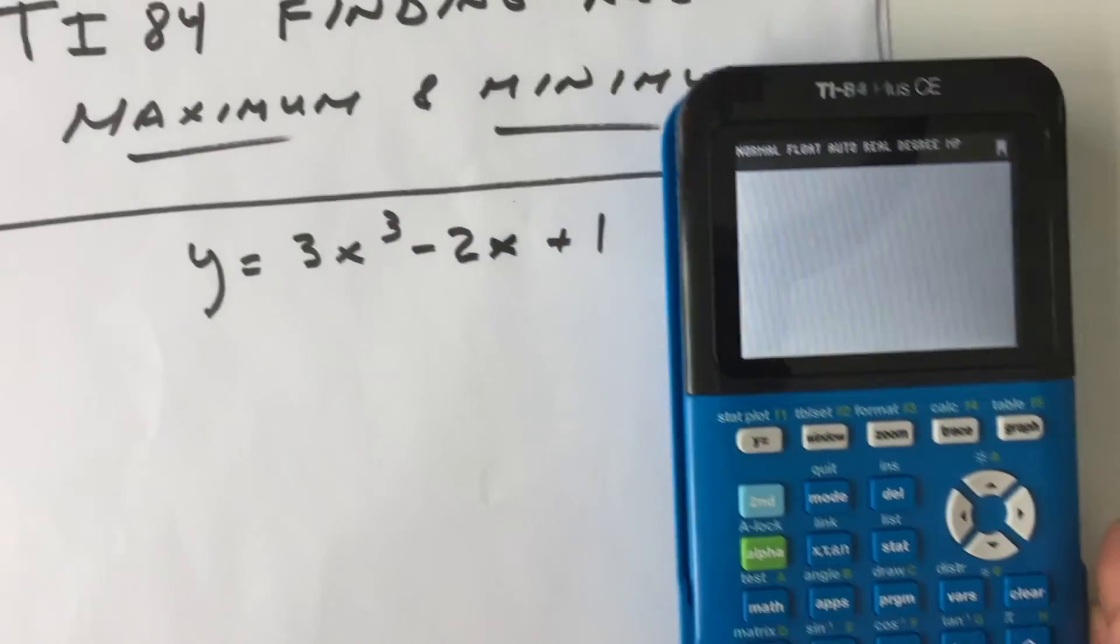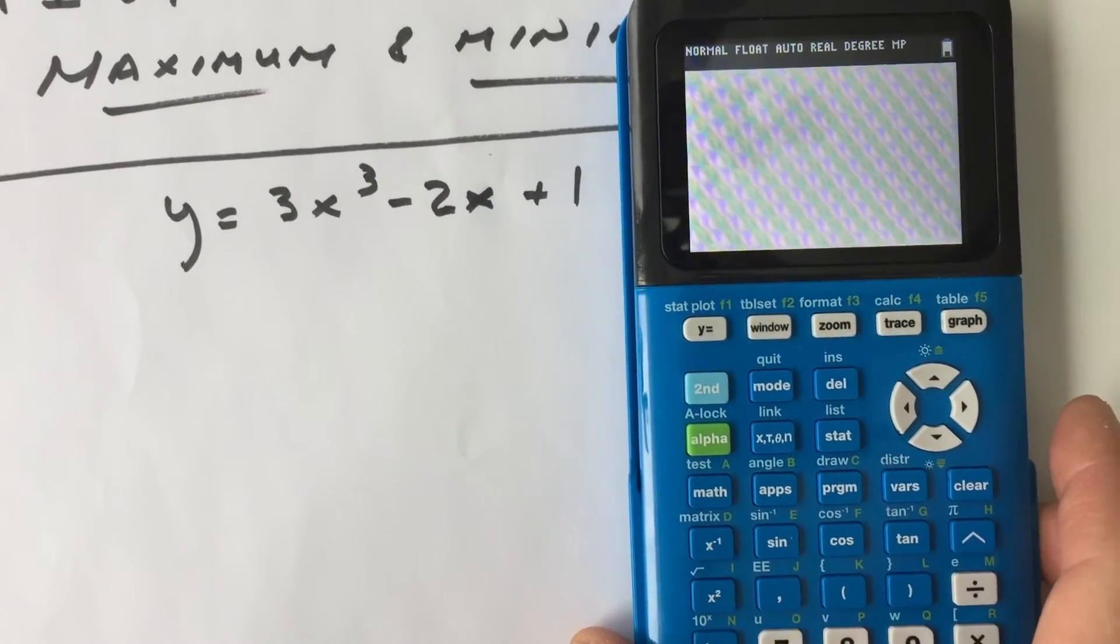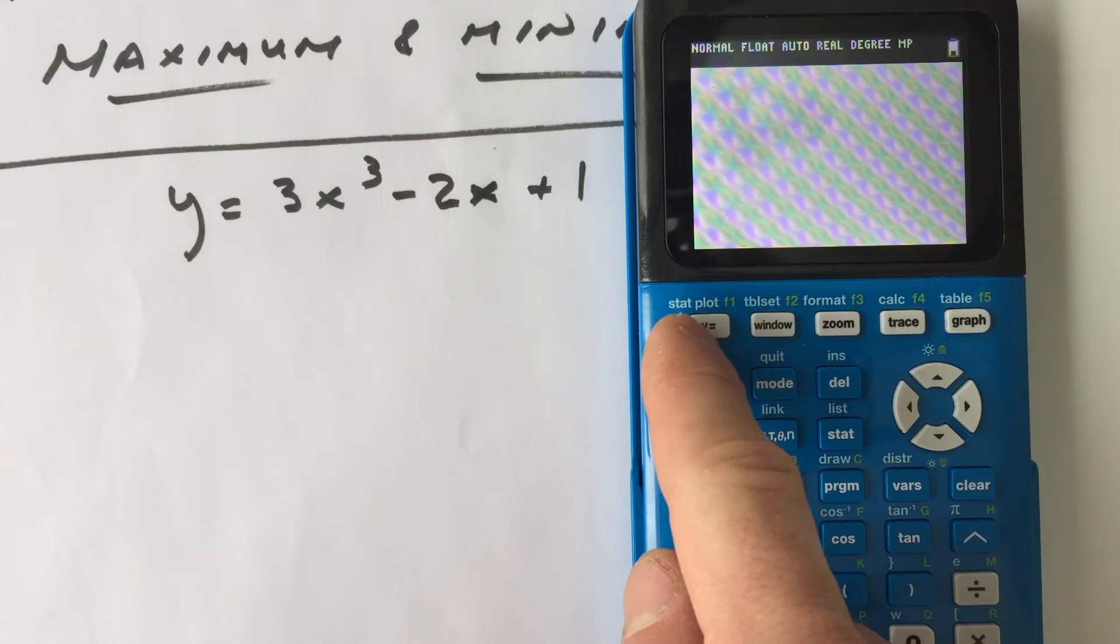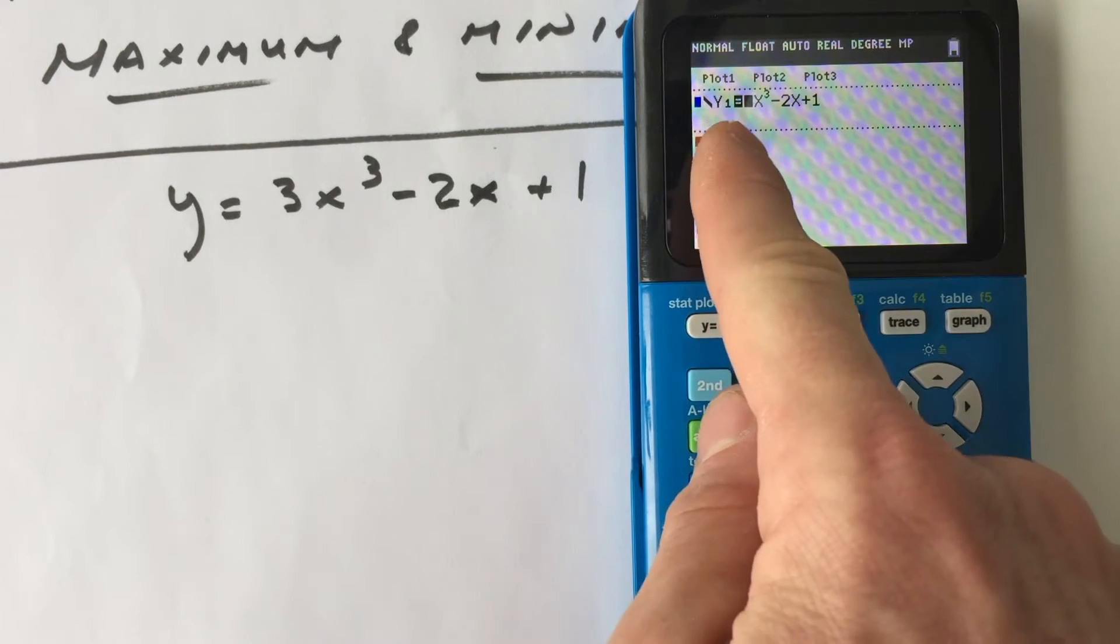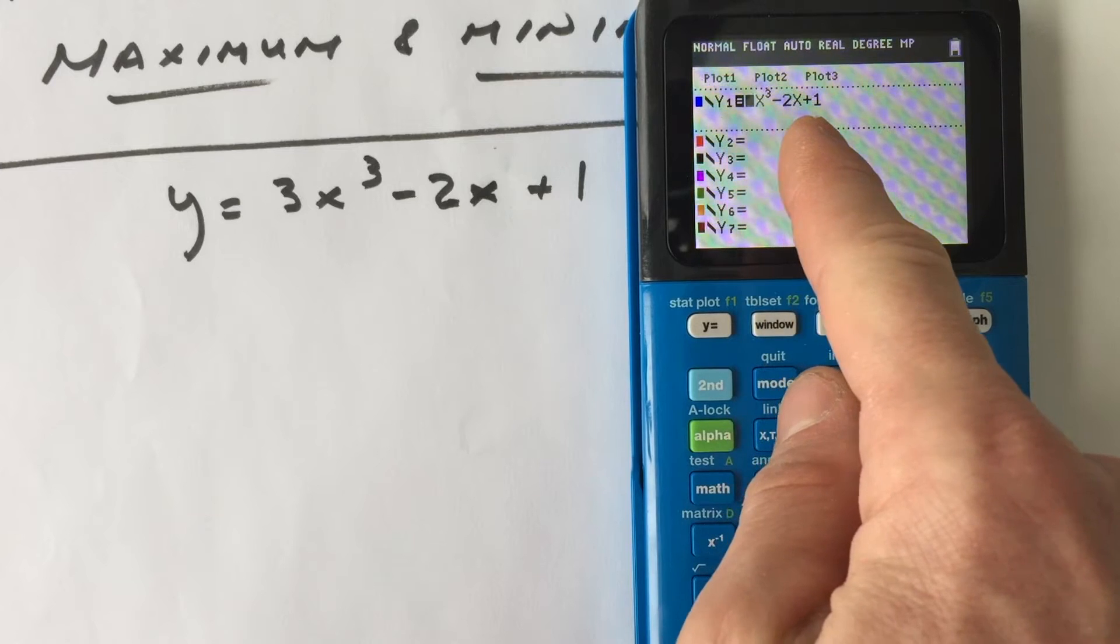The first thing we want to do is input this equation under y equals here in the upper left-hand corner. So y equals, and you can see I've entered it here already, 3x cubed minus 2x plus 1.